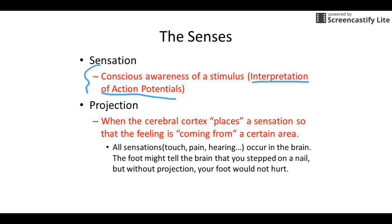The next concept is projection. It doesn't do any good for your brain to feel pain if it can't locate it — you need to know it's your foot hurting or that someone's tapping your shoulder. So the brain projects, essentially placing the sensation so it feels like it's coming from a certain area. It's a construct of the mind — the signal doesn't go back down to the toe, but the brain makes it feel like your toe is hurting.